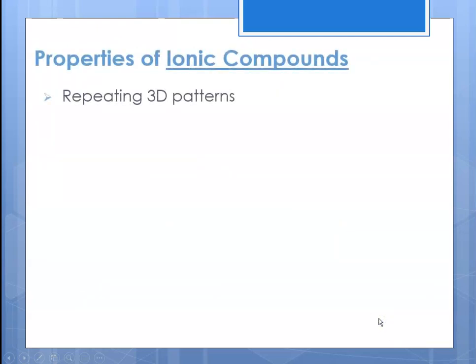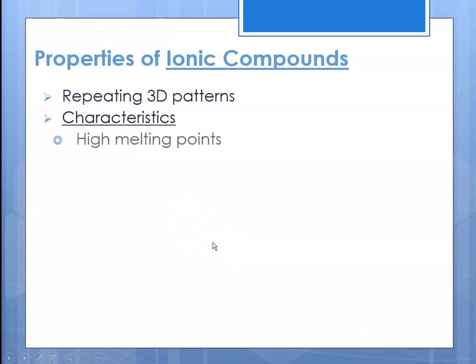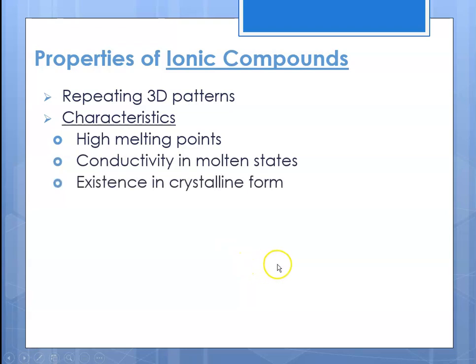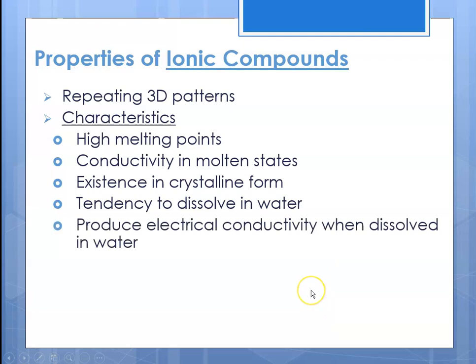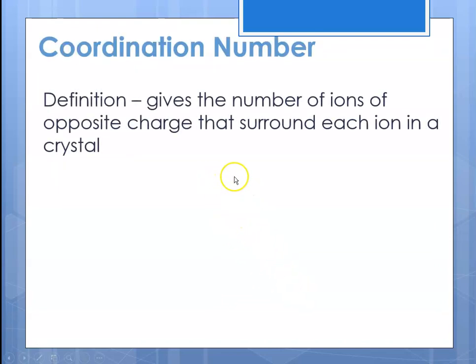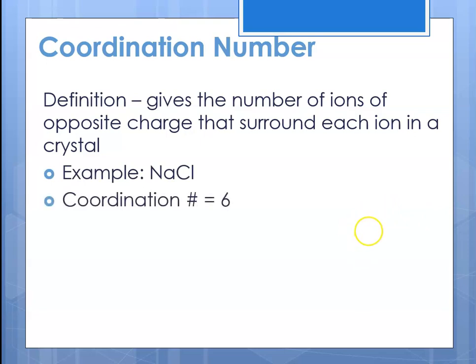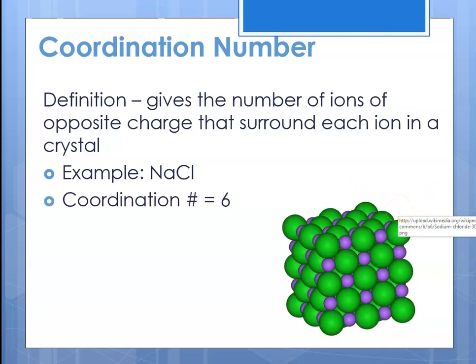Some properties of ionic compounds: they have 3D repeating patterns, high melting points, and are conductive in their molten state. They typically exist in crystalline form when solid, tend to dissolve in water, and produce electrical conductivity when dissolved. For example, pure water doesn't conduct electricity, but adding sodium chloride makes it conductive because the sodium and chloride ions carry the charge. The coordination number gives the number of ions of opposite charge surrounding each ion in the crystal — sodium chloride has a coordination number of six.